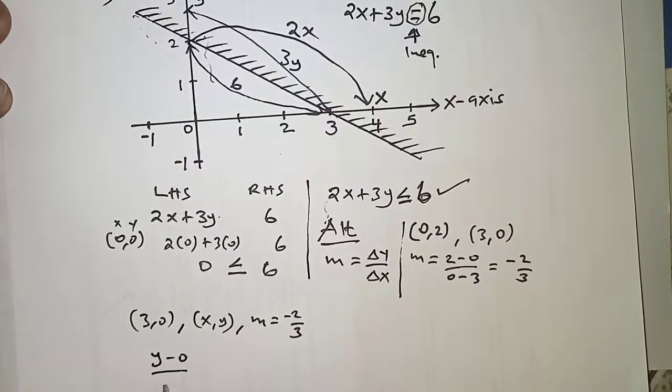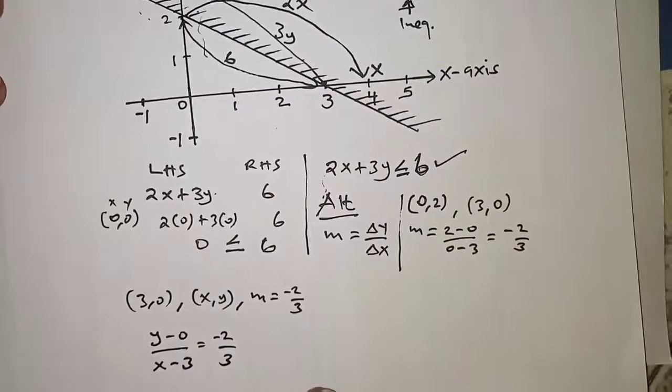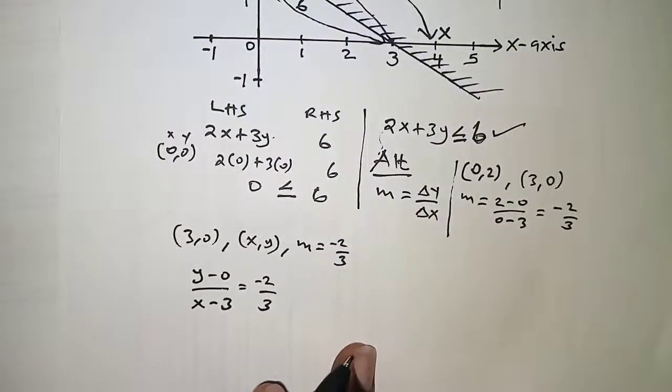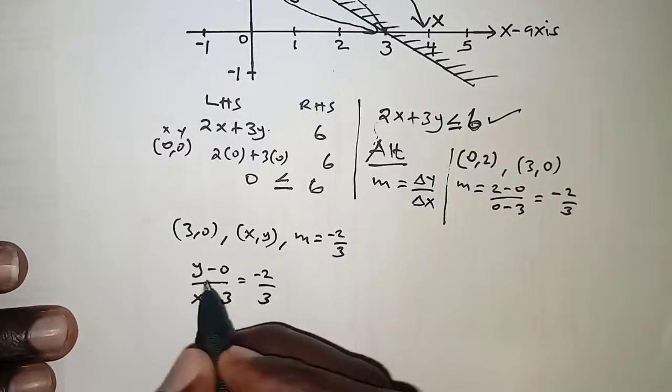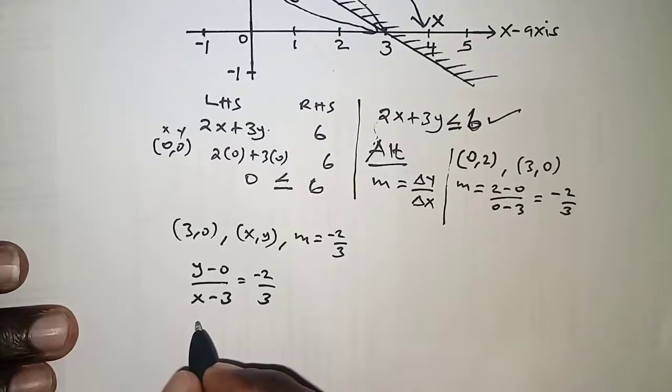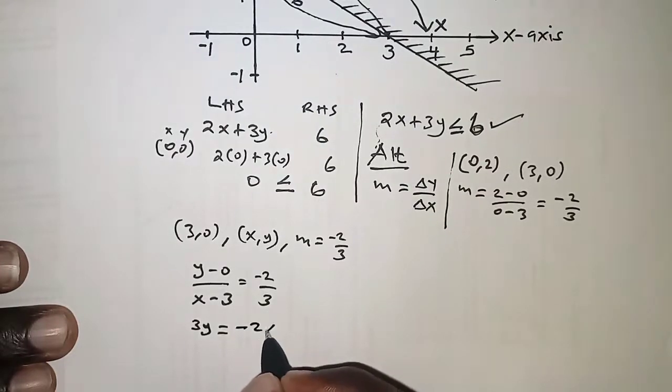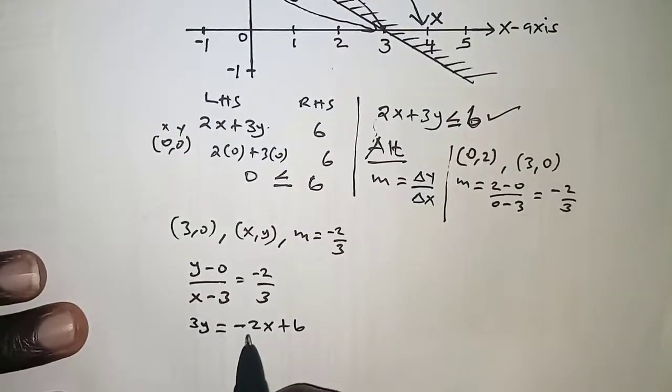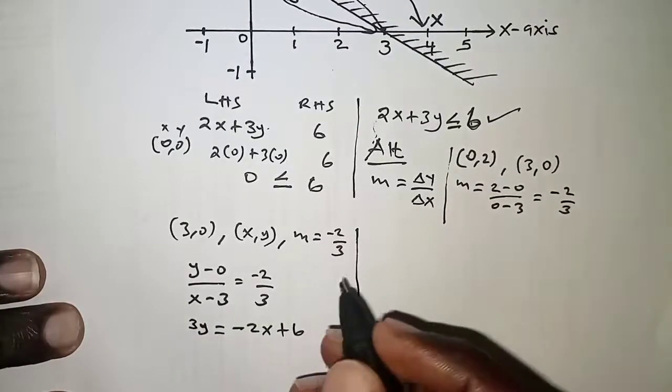When you cross multiply, we will have 3 by y, so that gives us 3y is equal to negative 2x plus 6. Negative 2x, we can have it on the other side, so let it cross to the other side. So that we have 2x + 3y is equal to 6.